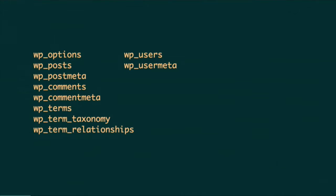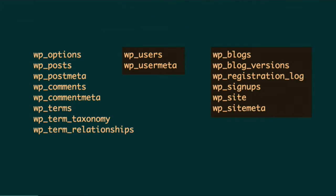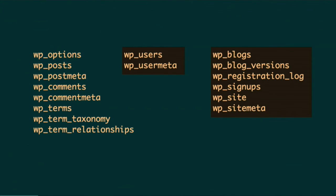When you install WordPress for the first time, you get a set of ten tables — posts, options, comments, terms, users. The second you install WordPress Multisite, the users table becomes global, and then you get a set of another six tables that hold the sites, the networks, and then some registration and sign-up information. Now, at this point, you have a Multisite. It only has one site, but it can be considered a network.